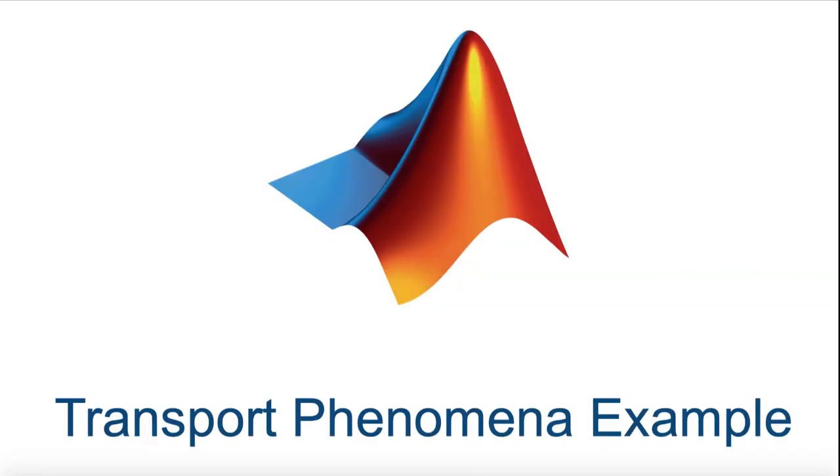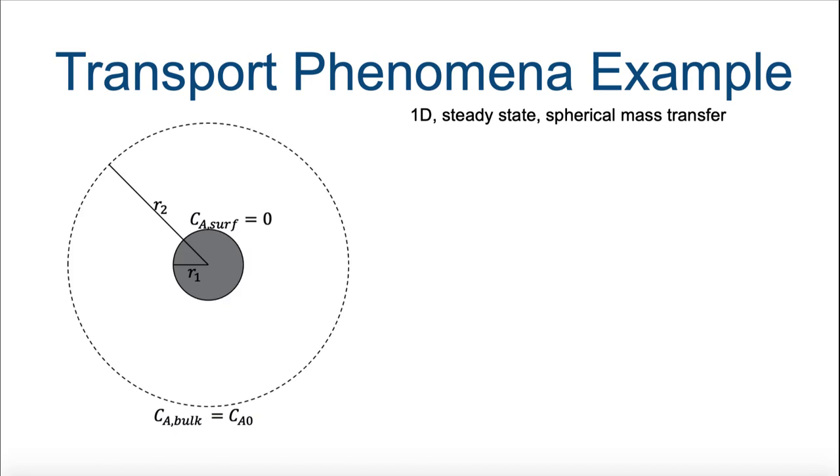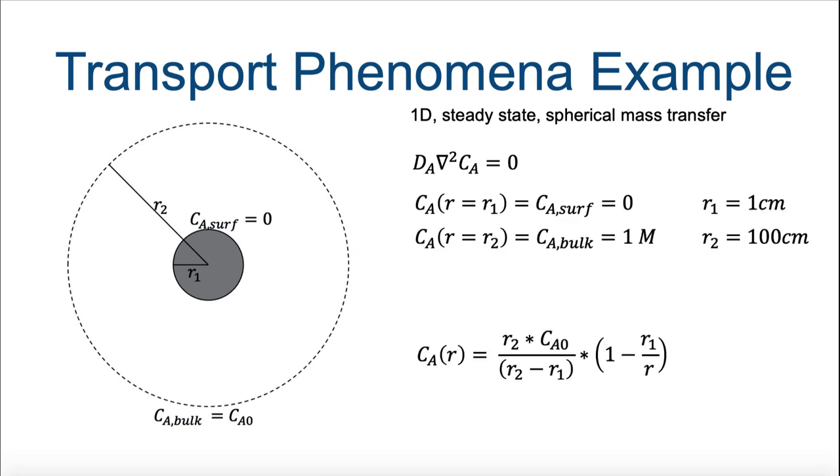Now, let's apply everything we've learned to a chemical engineering transport phenomena problem. Let's say your professor wants you to plot the concentration profile of the consumption of chemical A, which is an instantaneous reaction on the surface of a pellet suspended in bulk chemical A. By identifying proper problem geometry and boundary conditions, you've determined that the following equation is appropriate.